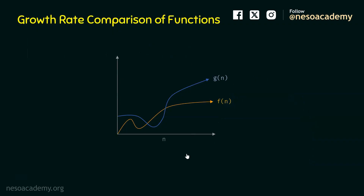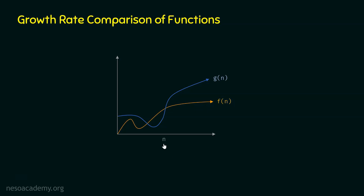In this graph, we can observe two functions, F(n) and G(n), and their growth rates are shown. The x-axis represents the input size N. Both F(n) and G(n) are dependent on N, so as the size of the input increases, their growth rates change.